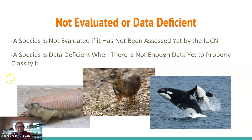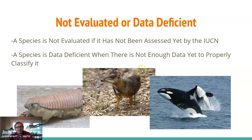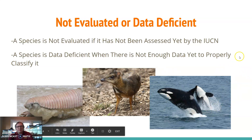Here are some examples of animals that fall into the data deficient category. The pink fairy armadillo lives underground and can be hard to track. The Javan mouse deer hides in tall undergrowth in the forest, so it's also hard to keep track of. Even large animals like killer whales may be data deficient because they have a worldwide population that is very hard to track efficiently.